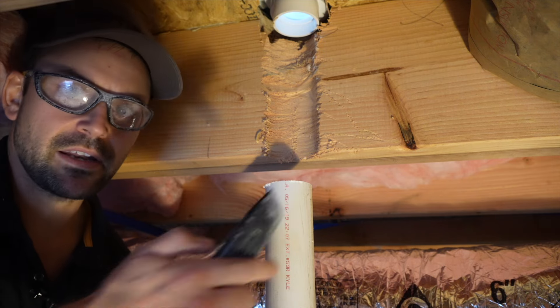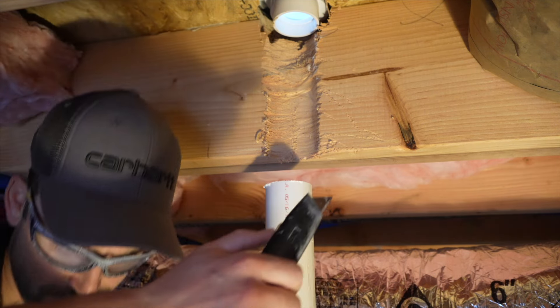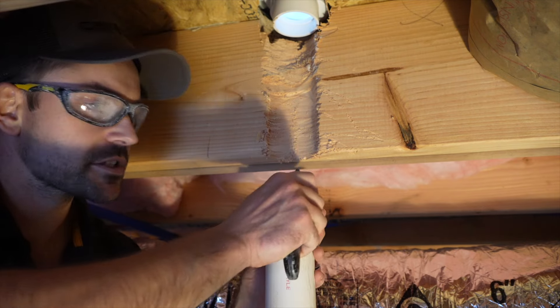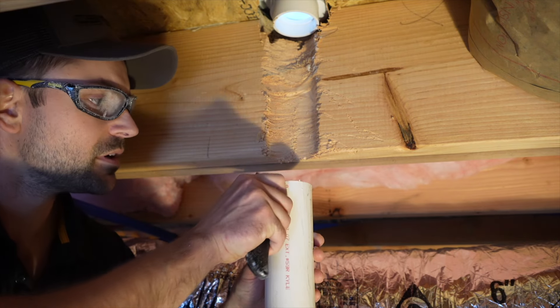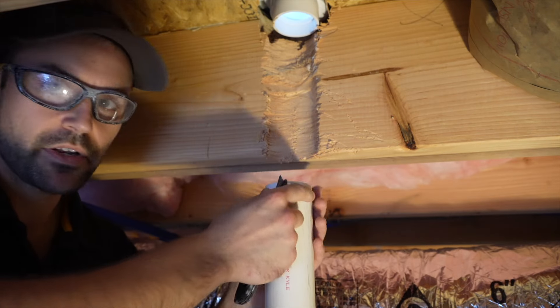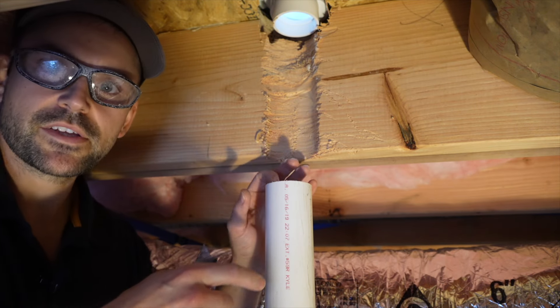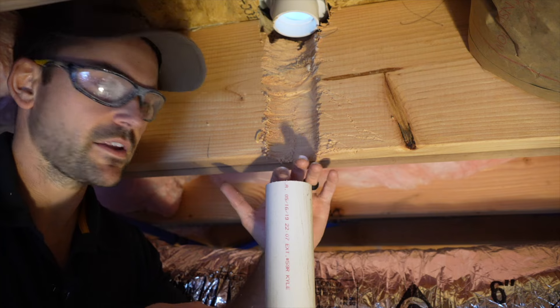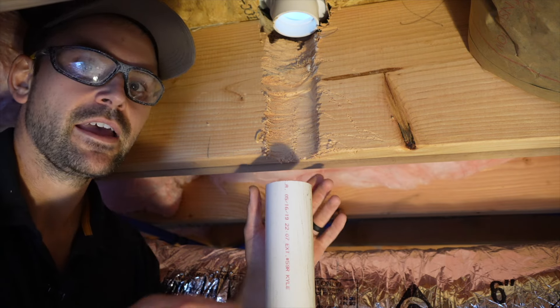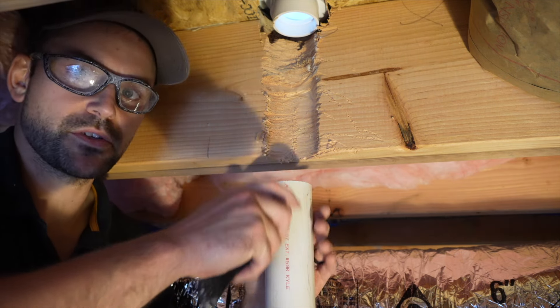After you cut it where you want it, you got to take a utility knife and clean the burrs around the pipe. What you also need to do that's very important is clean the burrs off from the inside of the pipe right here, because hair and whatnot can gather on those burrs if you don't remove them.